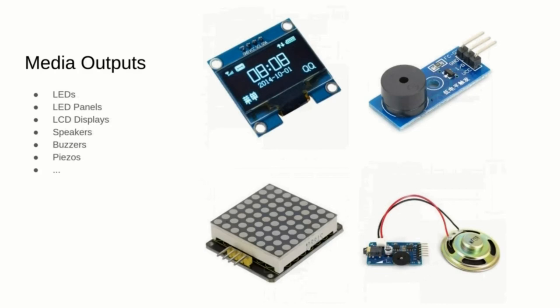Another way your microcontroller can interact with the world is by outputting multimedia signals. To output sound through a speaker or piezo you just need a single analog pin, but you may also use a single digital pin with pulse width modulation to make vintage music. You can control a single LED with a single digital pin, or use multiplexers to control an LED matrix in the same way you read from a keyboard matrix. When interacting with LCD or OLED displays, you probably need to set up an SPI or I2C connection.